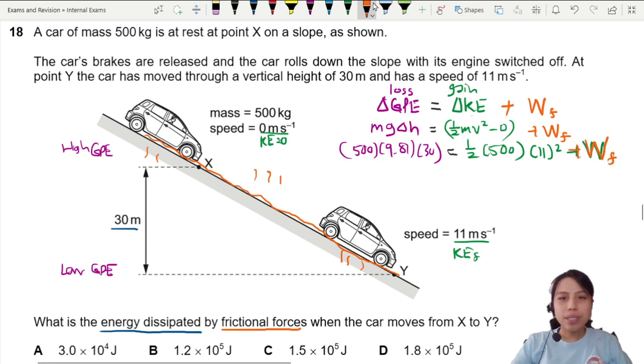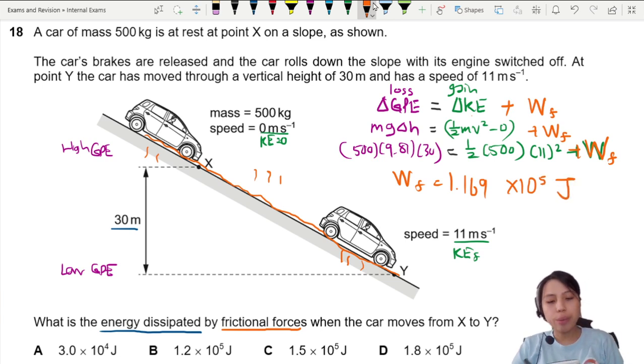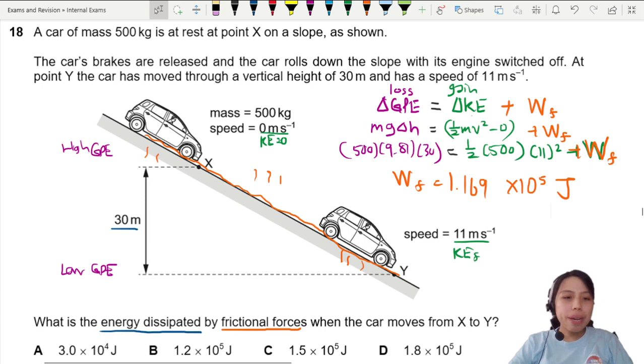Okay, and we press calculator. We should get a work done against friction of 1.169 times 10 to the 5 joules. Let me double check my calculator. Yes, 1.169, so the best and closest round off to 2 significant figures will be 1.2 times 10 to the 5 joules. So then that will be 1.2, answer B.